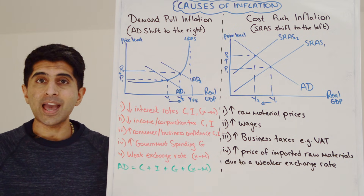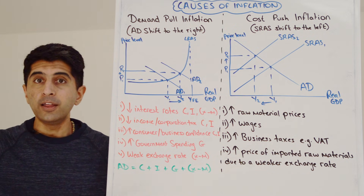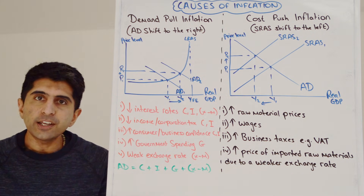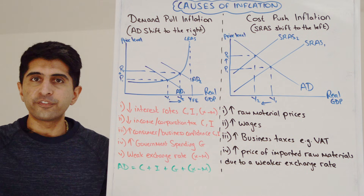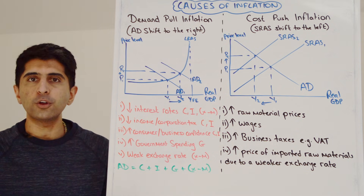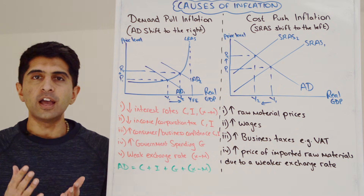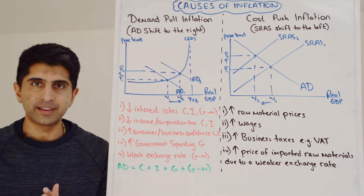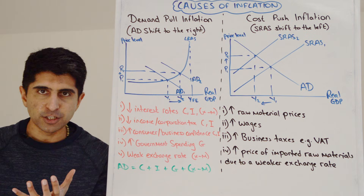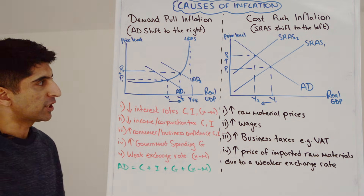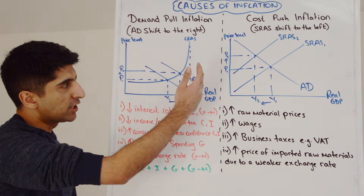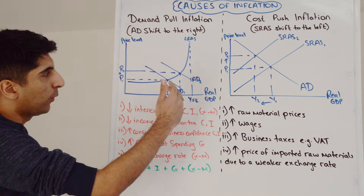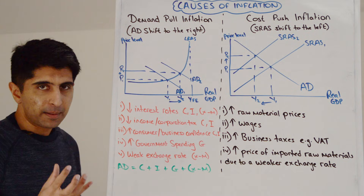So wages will go up — the price of labour — the price of capital will go up, the price of land will go up. That will increase the cost of production for firms, and firms will then pass on those higher costs via higher prices of goods and services. That's why we get demand-pull inflationary pressure when AD shifts to the right — that's why prices of goods and services rise.